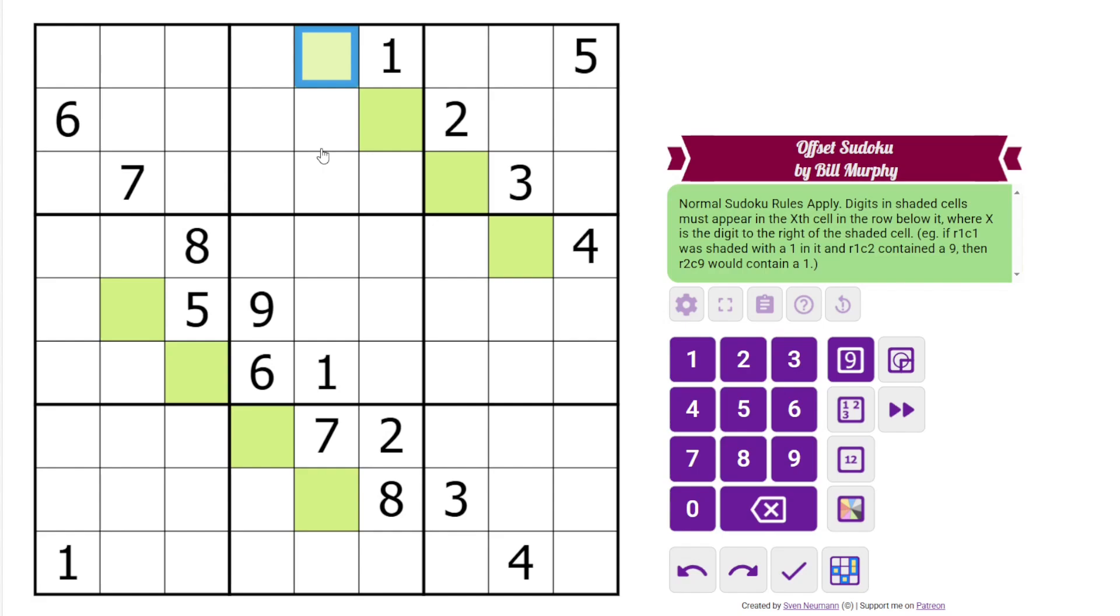So that's a little wordy, but Bill gave us an example. If this cell were shaded and there were a 9 here, and there was a 1 here, which there can't be, this clue is telling us that 1 in the next row appears in the 9th cell. So it would go here.